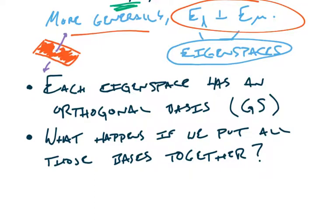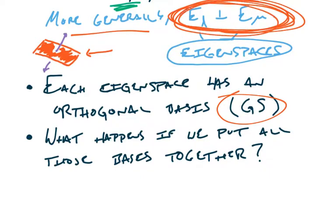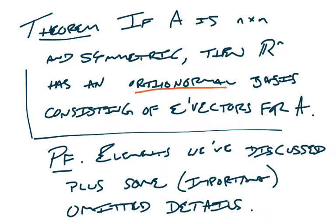If you have a higher-dimensional eigenspace, you just use Gram-Schmidt to orthogonalize any basis for that eigenspace. Then you have an orthogonal basis for that eigenspace, which by the earlier fact is orthogonal to everything in all the other eigenspaces. Throwing it all together, you form a giant mutually orthogonal set of vectors. Then to get orthonormal, just unitize every vector in your collection.